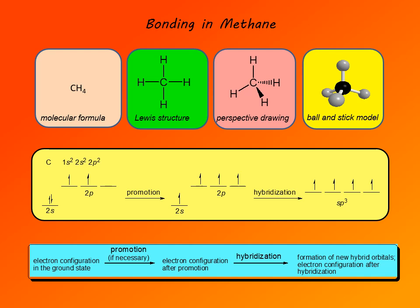Then there is promotion, if necessary — in the case of carbon, it is necessary. The atom is then in an excited state to form a bond. Finally, we apply the mathematical operation of hybridization, combining orbitals to give hybrid orbitals of the same properties.